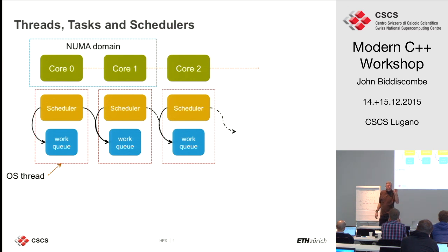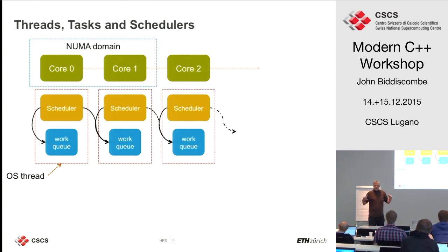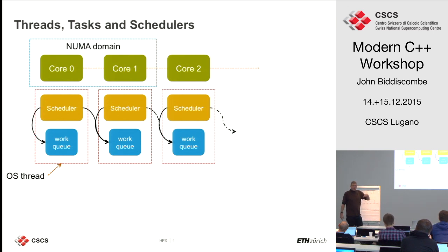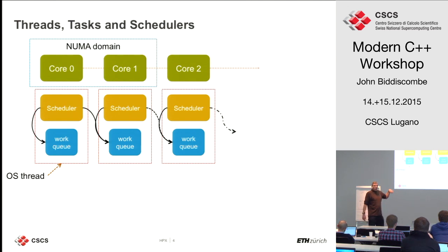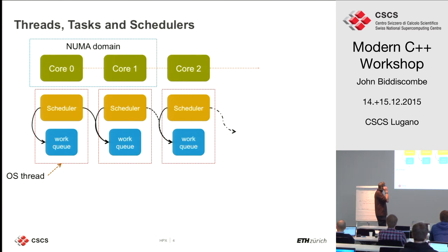You keep those operating system threads alive for the duration of your program — you don't repeatedly create and destroy them. This is where you effectively save time, because creating and destroying an OS-level thread is expensive due to thread local storage and context switching. When you create and destroy HPX threads, all you're doing is swapping function pointers to bits of code with a little memory used for the stack.